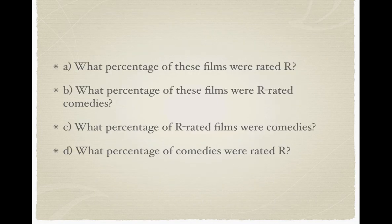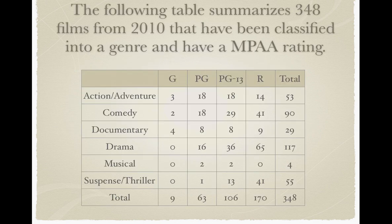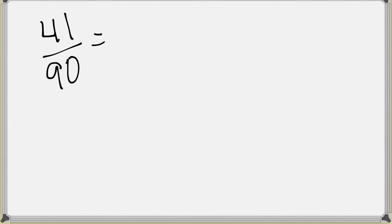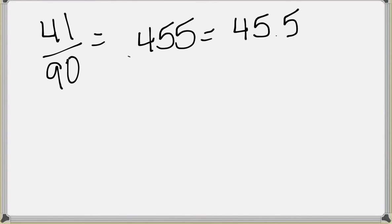Finally, what percentage of comedies were rated R? Now we're looking at a different group — the total comedies. Looking across the comedy row, we have 90 total comedies, and of those, 41 were rated R. So 41 out of 90 gives us 0.455, or approximately 45.5% of all the comedies were rated R. That's just a simple example to give you an idea of what we can do with categorical data.